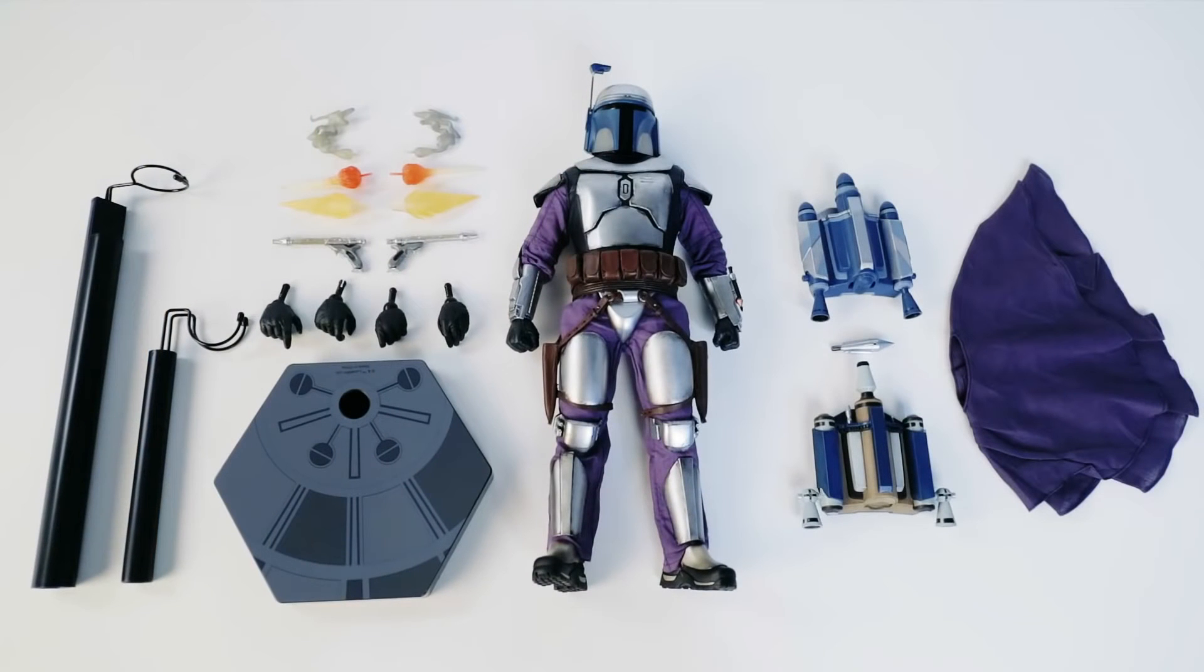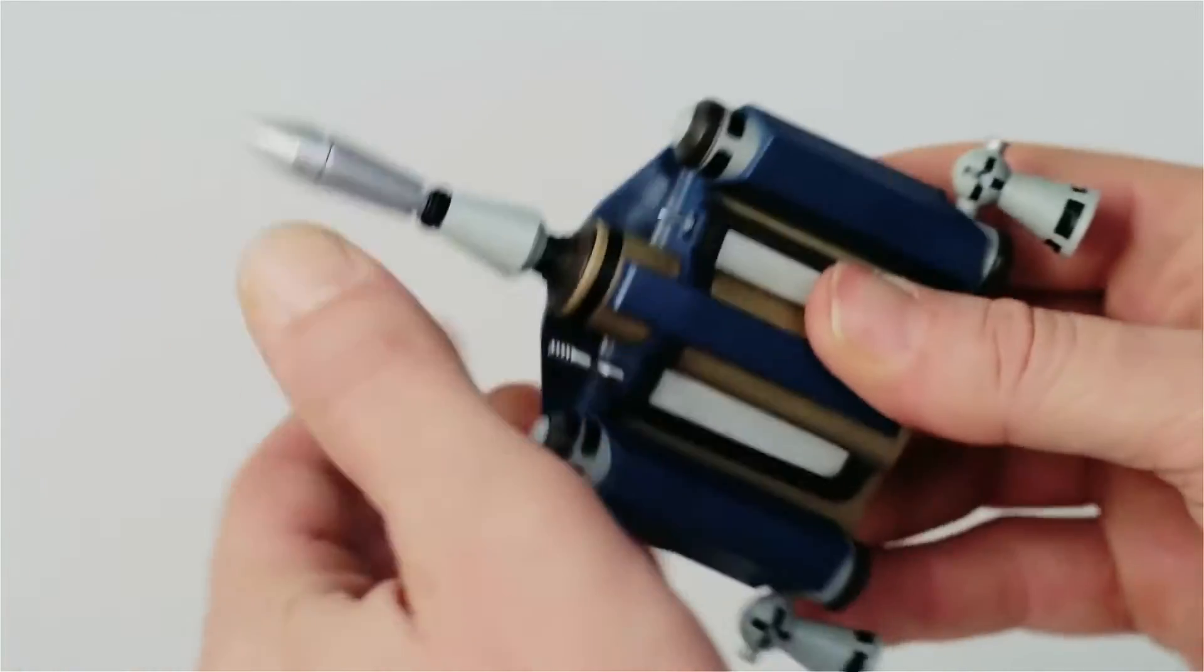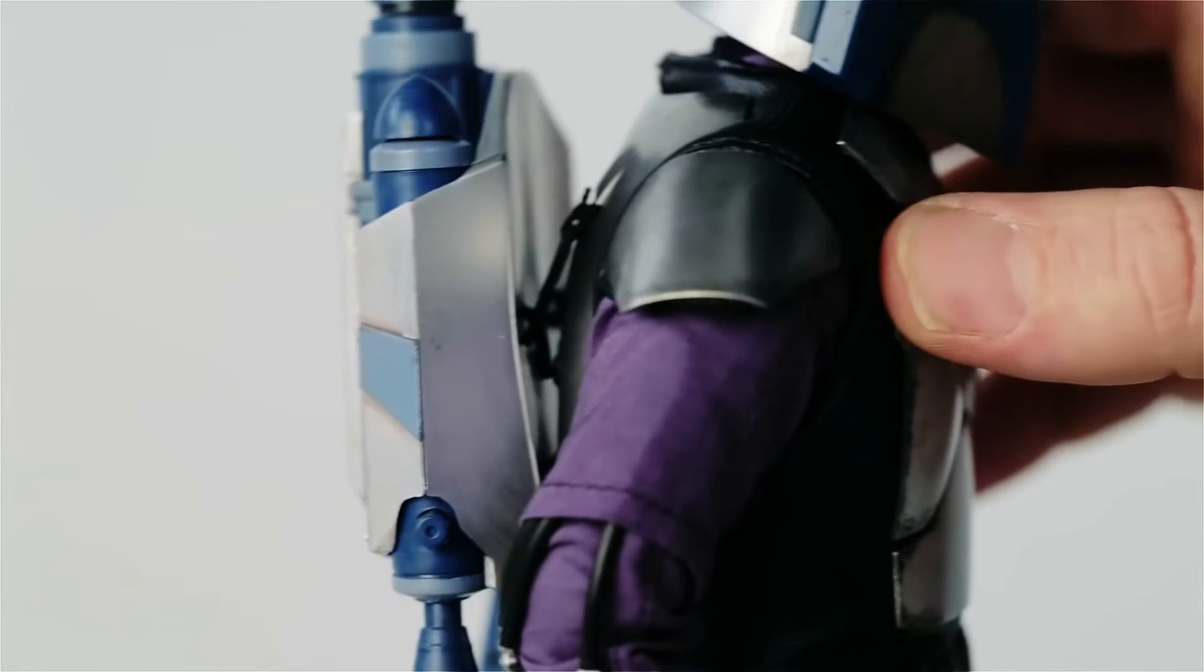The six scale Django Fett figure comes with a number of swap out parts and accessories. Insert the missile into the top of the Z6 jetpack. The jetpack hooks onto the tabs on the back armor plate.